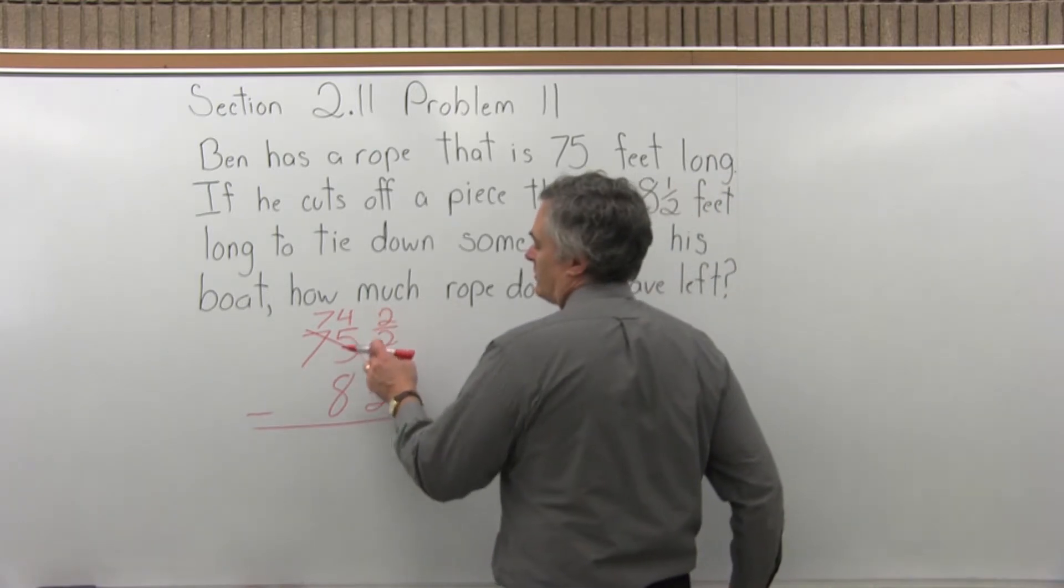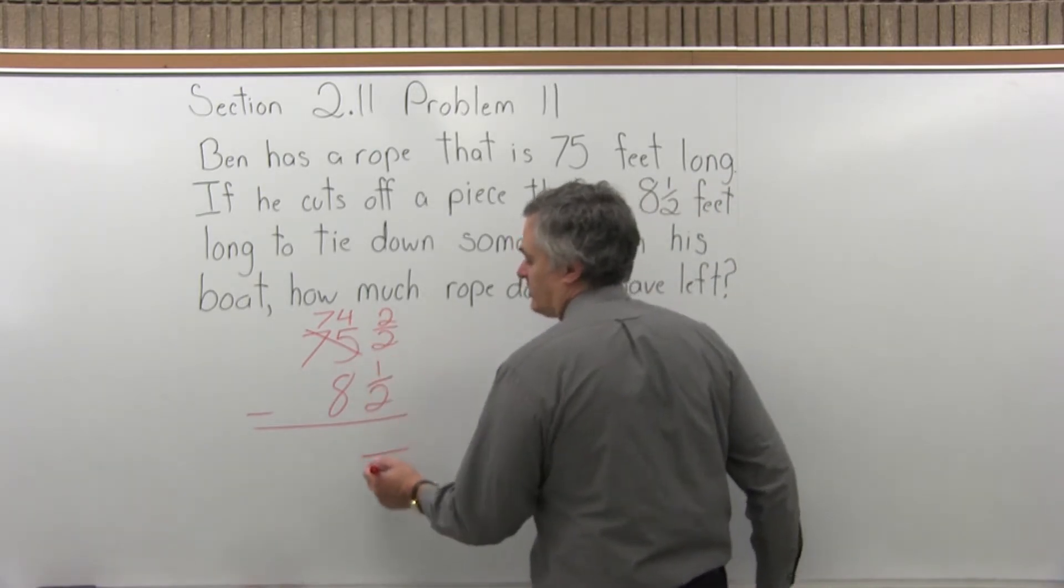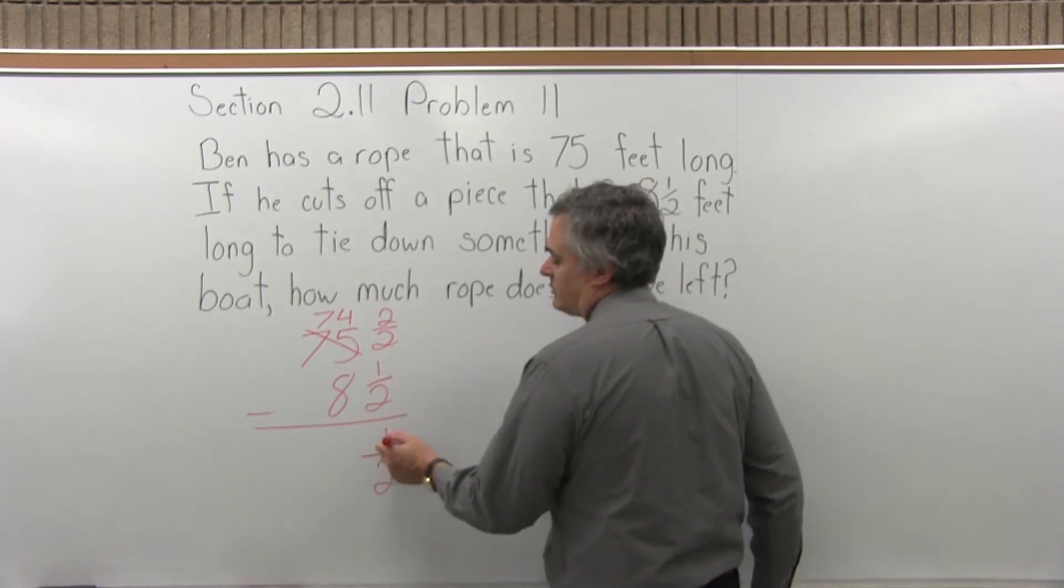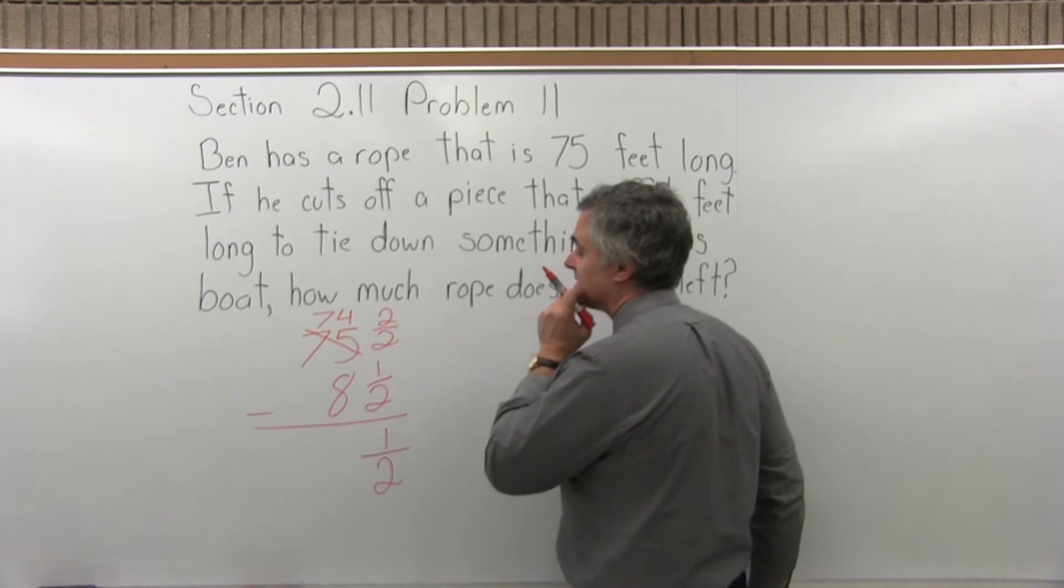So now I have 2 over 2 minus 1 over 2. I have a common denominator of 2. Combine the numerators. 2 minus 1. Well, 2 minus 1 is 1, so the fraction is going to be a half.